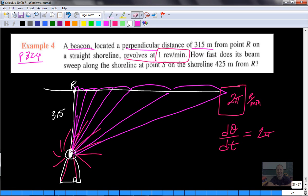At point S on the shoreline, that is 425 meters from R. Now, it's important to note, very important to note, that this 425 is at the time we are concerned with finding this rate of change. So do not put the 425 in right away. This 315 is a constant throughout the problem, but you've got to be careful with this 425. This comes later.